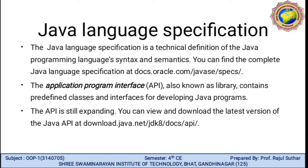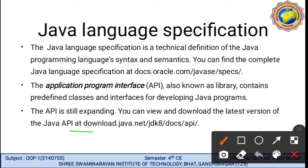The Application Program Interface, API, also known as a library, contains the predefined classes and interfaces for developing Java programs. The API is still expanding. You can view and download the latest version of the Java API at download.java.net/jdk8/doc/api/. This is the path to download the latest version of Java.